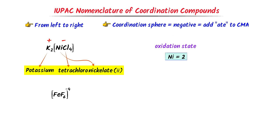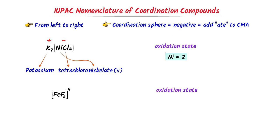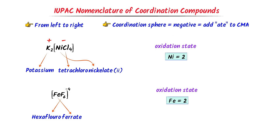In case of this coordination compound, there is already a negative charge, so I do not put any additional charge on it. After calculation, the oxidation state of iron is +2. In the coordination sphere, there are 6 fluorine ions. I write 'hexa' and for the ligand fluorine I write 'fluoro'. The central metal atom is iron, and since the charge on the coordination sphere is negative, I write 'ferrate'. The oxidation state of iron is 2. Thus I get 'hexafluoroferrate(2)'.